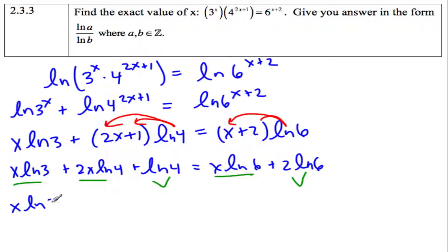x ln 3, I'll factor it out at the same time, plus 2 ln 4, and this one becomes a minus, and I'll factor out the x as well, minus ln 6 equals 2 ln 6, and then this piece comes to the right, minus ln 4.